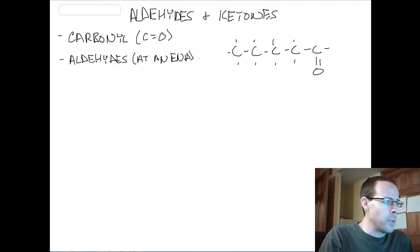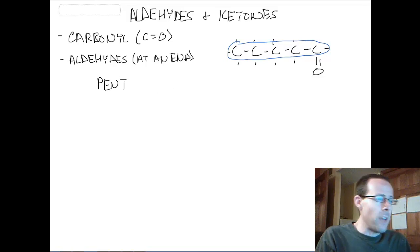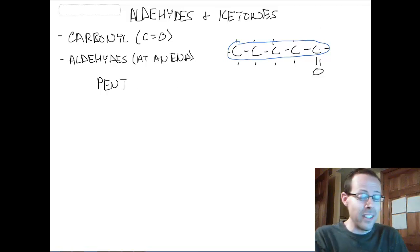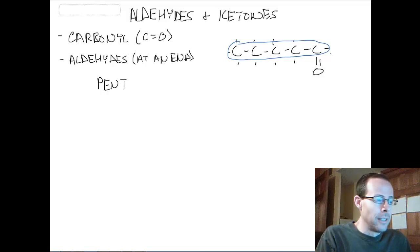Simply on this one, we identify our longest chain. We have five carbons in a row, so we know this is pent something. And then what happens is, if we have an aldehyde, and we know this is an aldehyde because it is at our terminal carbon, because there's not a carbon right here, this is our last carbon. Because of that, it has the ending an-al, just like aldehyde.